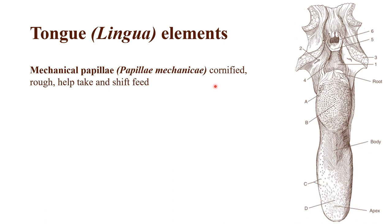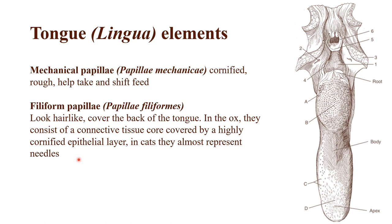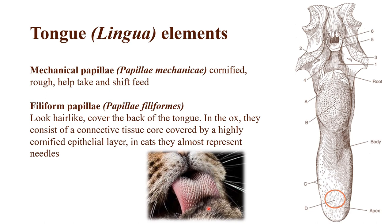First we have the mechanical papillae, which are rough, hard, and cornified — they actually help to take and shift the feed. The first type is the filiform papillae, or papilla filiformes, which look almost like hair and cover the dorsum of the tongue. For some animals they're softer; for others, like cats, they're actually really sharp and help not only to pick up water and feed but also to groom themselves.